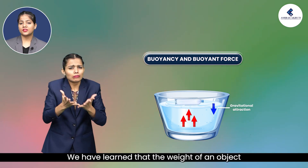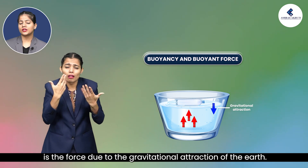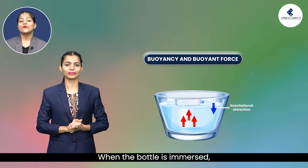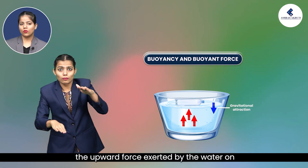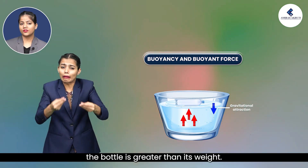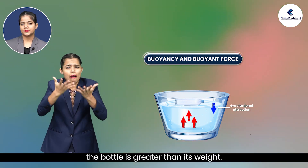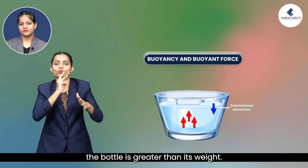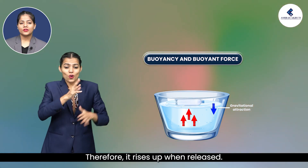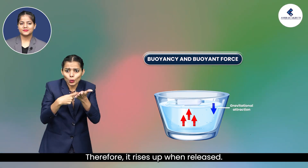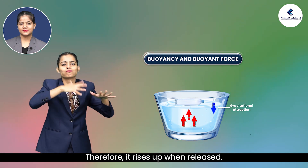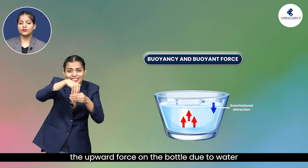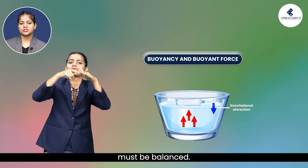We have learned that the weight of an object is the force due to the gravitational attraction of the Earth. When the bottle is immersed, the upward force exerted by the water on the bottle is greater than its weight; therefore it rises up when released. To keep the bottle completely immersed, the upward force on the bottle due to water must be balanced.